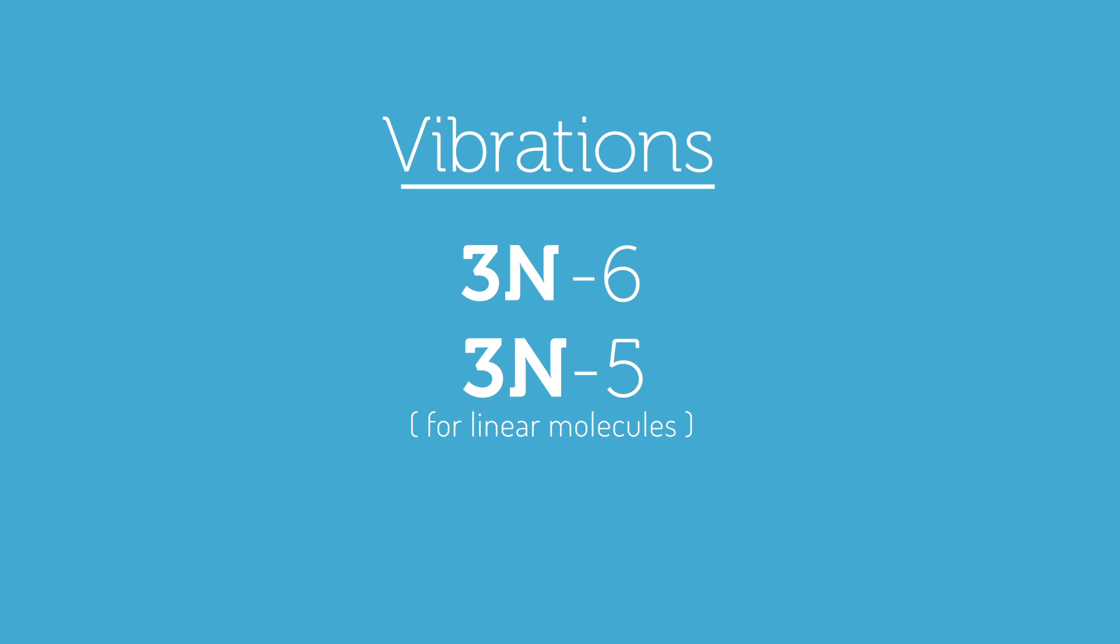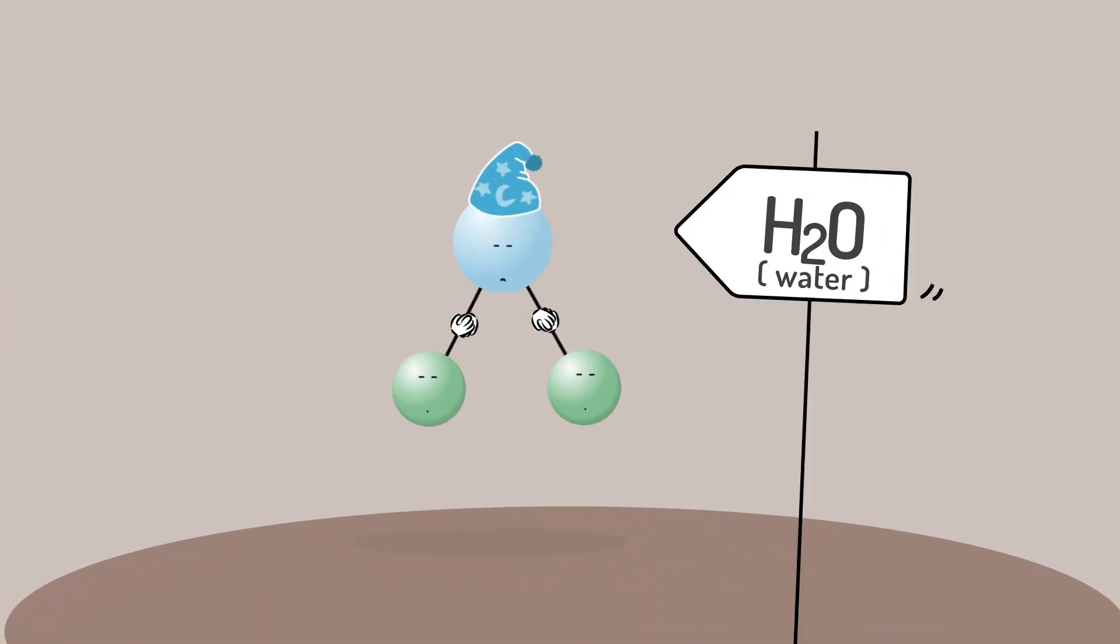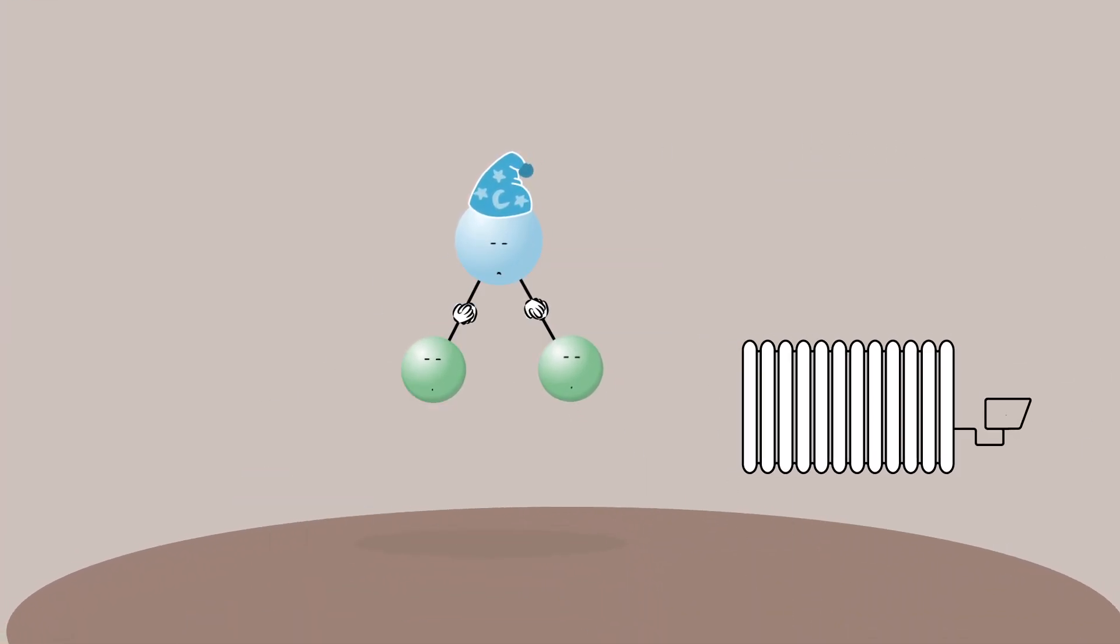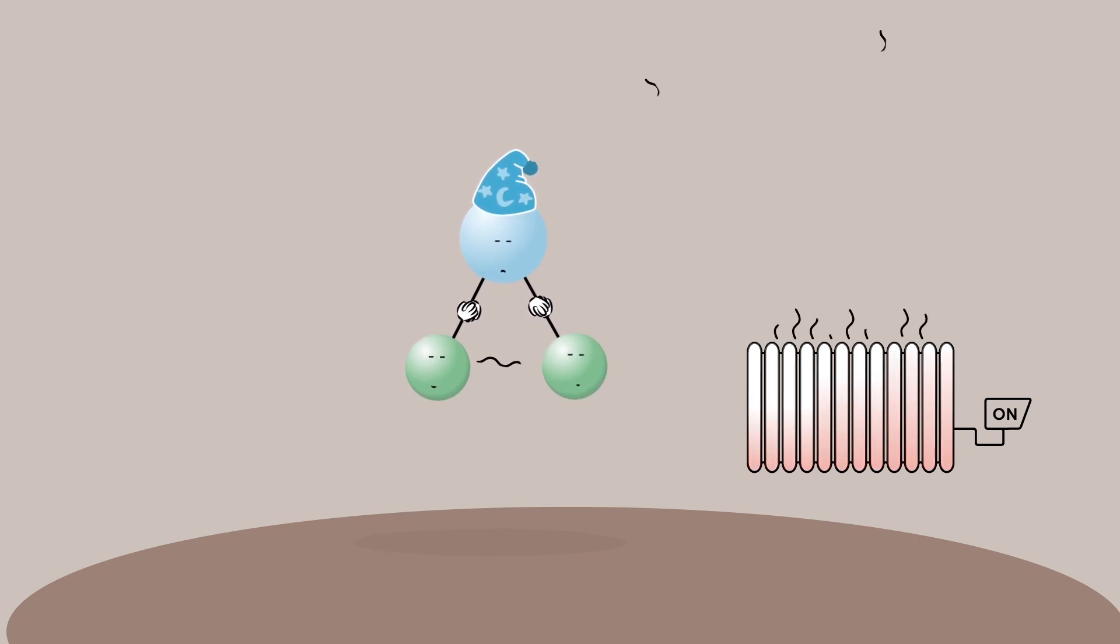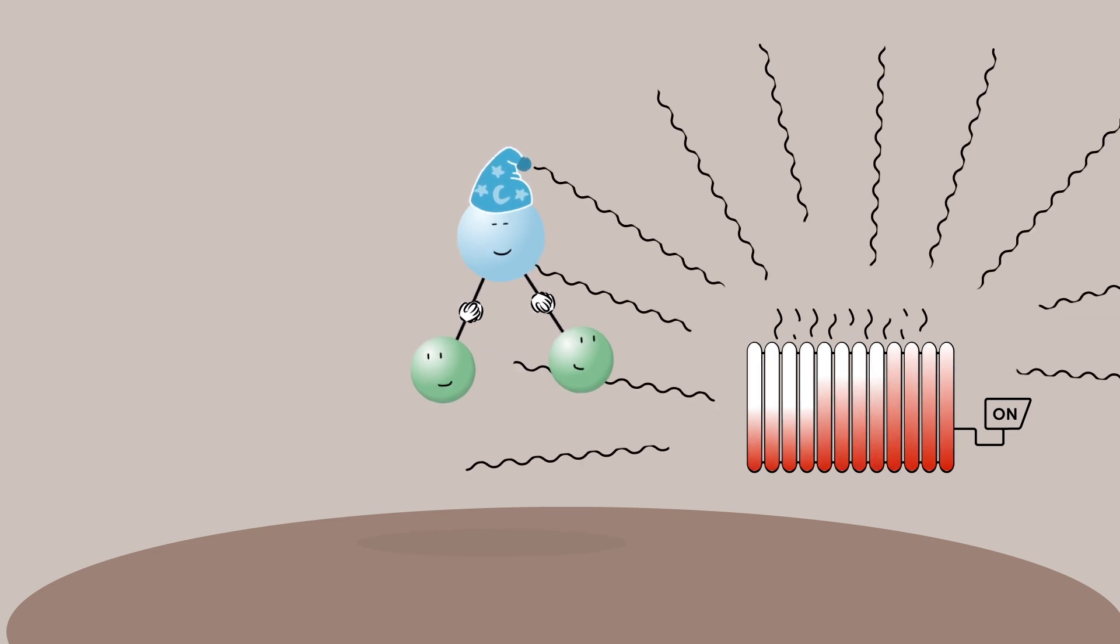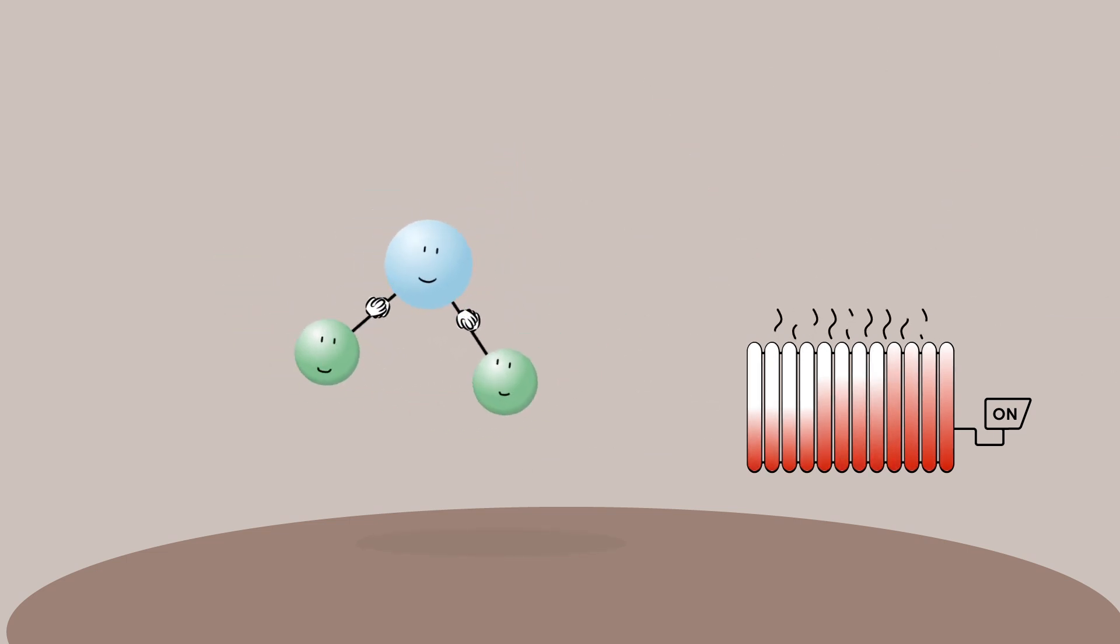So what's causing all this motion? Molecules move because they absorb energy from their surroundings, mainly in the form of heat or electromagnetic radiation. When this energy gets transferred to the molecules, they vibrate, rotate, or translate faster.